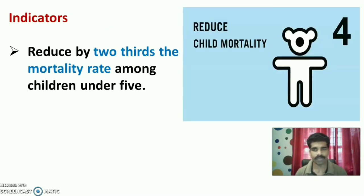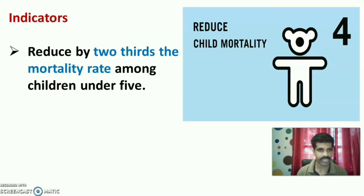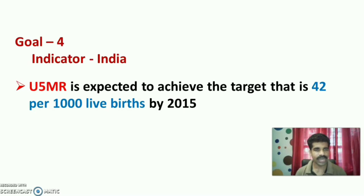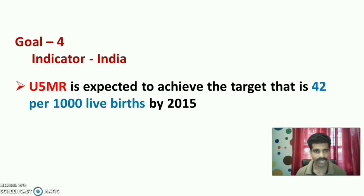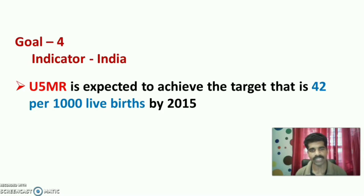Goal 4 is to reduce child mortality. The indicator was to reduce by two-thirds the mortality rate among children under five by 2015. For India, the under-five mortality rate was expected to achieve the target of 42 per 1,000 live births by 2015.